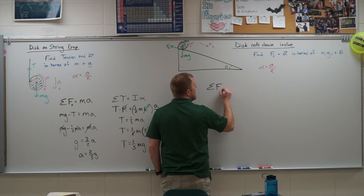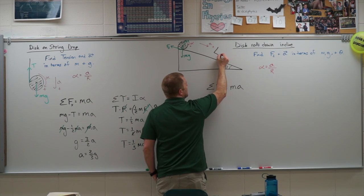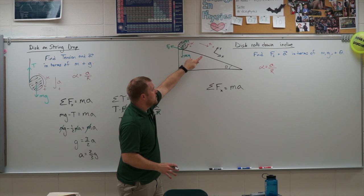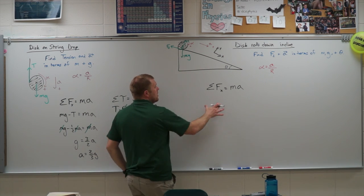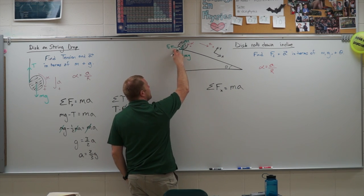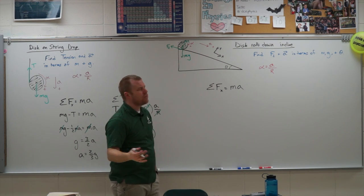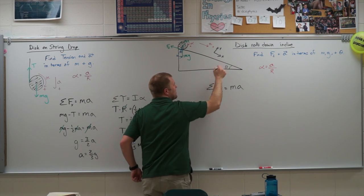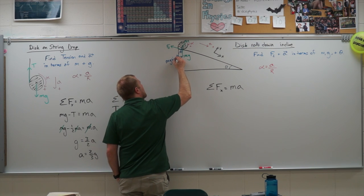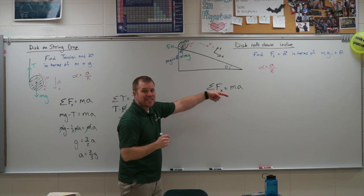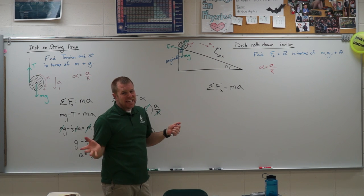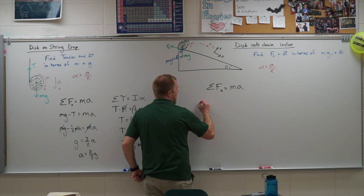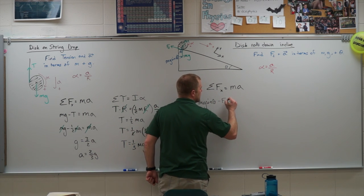The sum of forces in the x-direction equals MA. I'm rotating my coordinate system so that acceleration is only in the x-direction, meaning the sum of forces in the y-direction is zero. Gravity is at an angle, so I resolve MG into components. The angle here is theta, the same as the incline angle. MG sine theta is the component driving acceleration down the incline. So I have MG sine theta minus the force of friction equals MA.